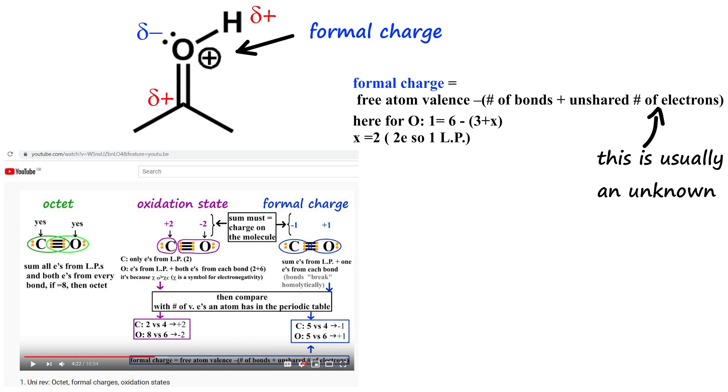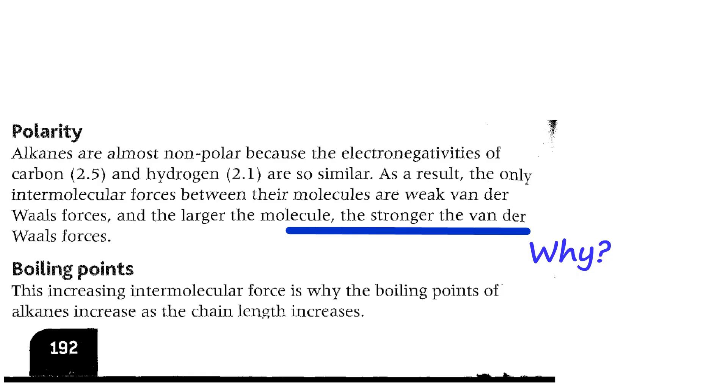To assign delta plus and delta minus, you need to look at electronegativities. The oxygen is the most electronegative element in this molecule, so that's where the delta minus is. Hydrogen and carbon have delta plus, then we have CH3 groups, but I wouldn't assign any permanent polarization there because they're just non-polar fragments.